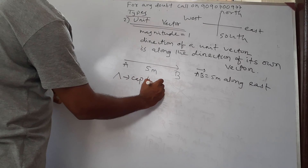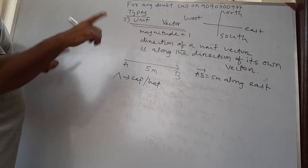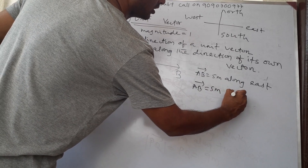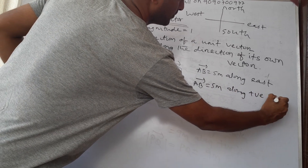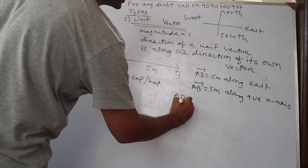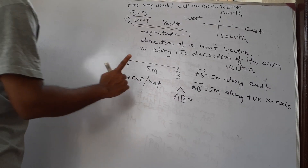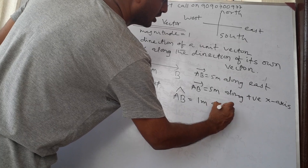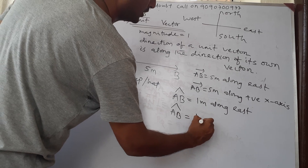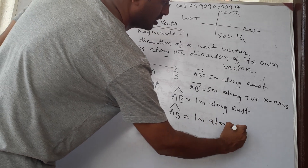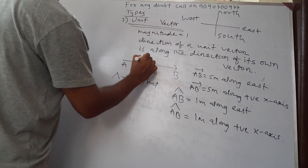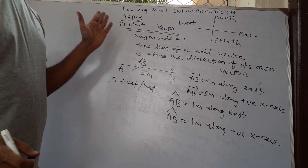A unit vector can be represented by putting a cap or hat over the letter. So if I write the unit vector of AB, I write AB-hat. I can also write vector AB as 5 meters along positive x-axis. The unit vector AB-hat has magnitude one, so AB-hat equals 1 meter along positive x-axis.